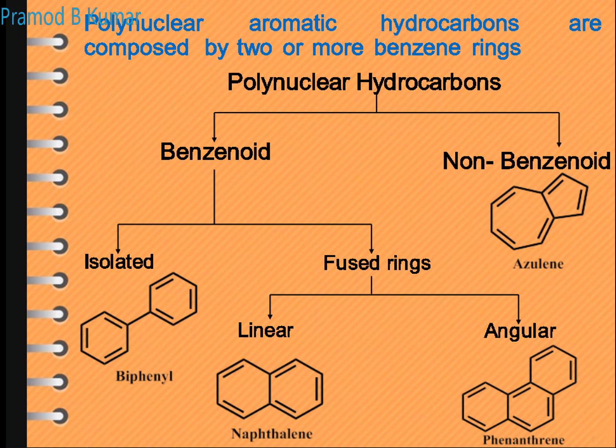Non-benzoid means the basic unit does not contain a benzene ring. It contains a seven-membered and a five-membered ring fused together, as in the case of azulene. This is the broad classification of aromatic polynuclear hydrocarbons — very important, and this is asked in the exam for two marks or as part of a ten-mark question.